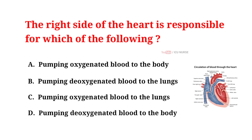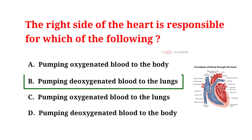The right side of the heart is responsible for which of the following? A. Pumping oxygenated blood to the body. B. Pumping deoxygenated blood to the lungs. C. Pumping oxygenated blood to the lungs. D. Pumping deoxygenated blood to the body. And the correct answer is B: pumping deoxygenated blood to the lungs.